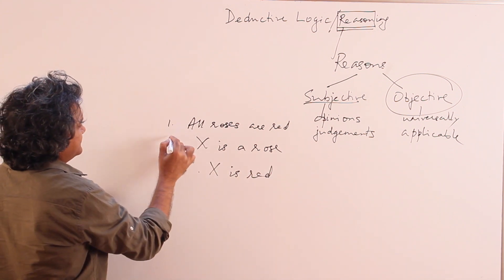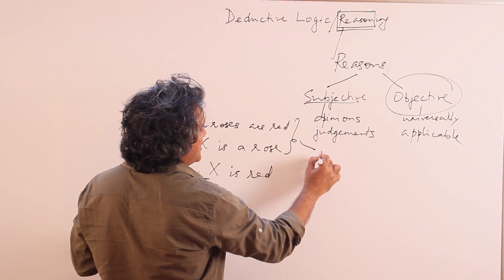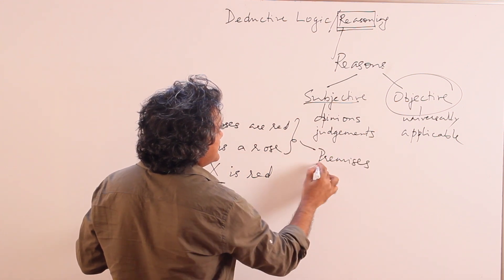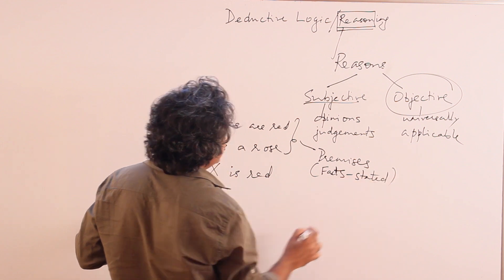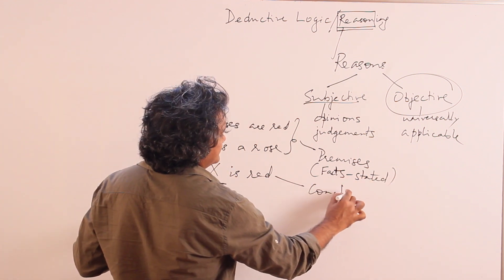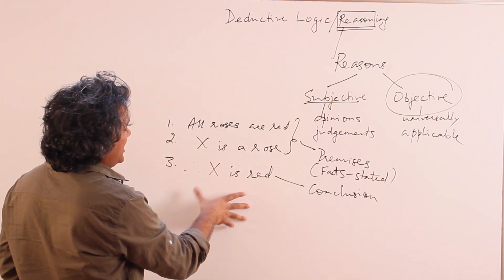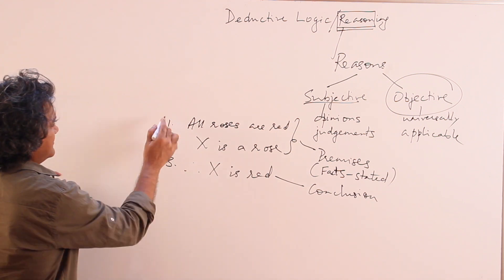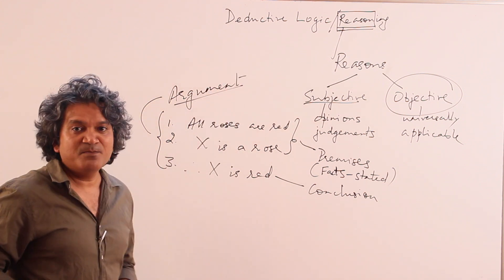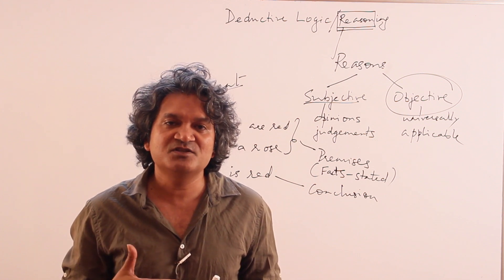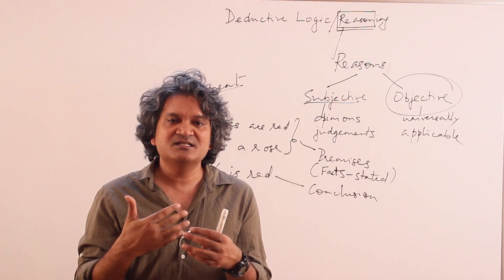Now these two, 1 and 2, the official term for them are premises. Premises are nothing but stated facts. And the third one is known as the conclusion. So if you look at this, this entire thing in logic is known as an argument.